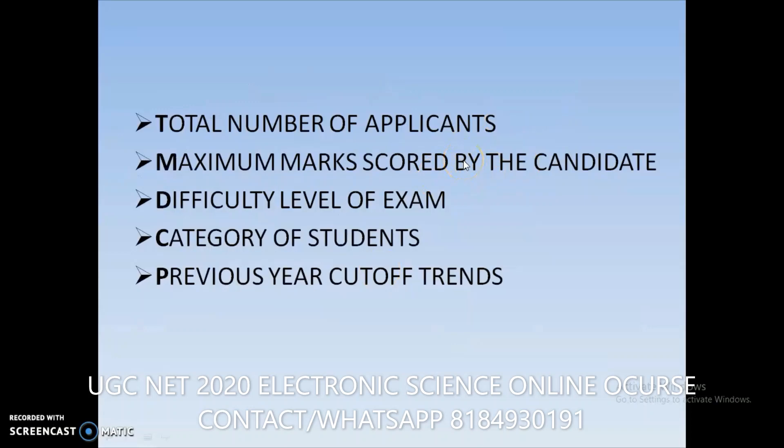These are the factors affecting the UJ Senate exam cutoff. The first factor is the total number of applicants. The UJ Senate exam is generally conducted for nearly 87 or 88 subjects. For each subject, if there are more applicants, there is a chance the cutoff will be reduced.